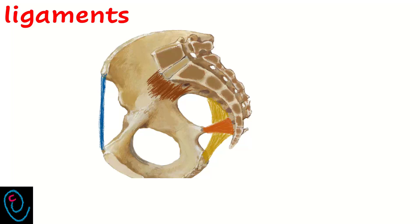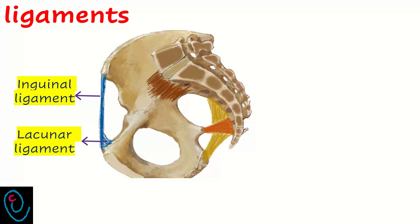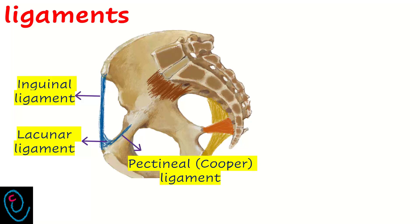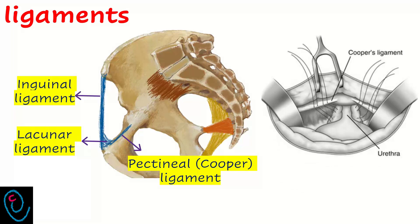Anteriorly, there is an important ligament known as the inguinal ligament. It extends from the anterior superior iliac spine to the pubic tubercle. A triangular extension from the medial part of the inguinal ligament forms the lacunar ligament. An extension from the base of the lacunar ligament stretches over the pectineal line and is called the pectineal ligament, or Cooper's ligament. One of the operations described for the management of stress incontinence is Burch colposuspension, where the surgeon makes sutures between the anterior vaginal wall and Cooper's ligament.